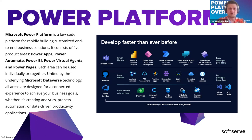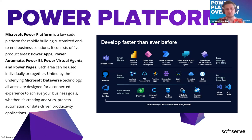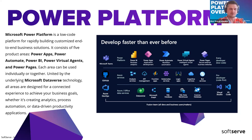We have a lot of capabilities to extend our platform using pro code development, because here we are pro code developers using .NET and Azure technologies to implement cool stuff and deliver value to clients. Power Platform consists of five major products. Power Apps helps you build different applications — both model-driven and canvas apps. Power Automate is similar to Logic Apps but simplified with better UI/UX experience.